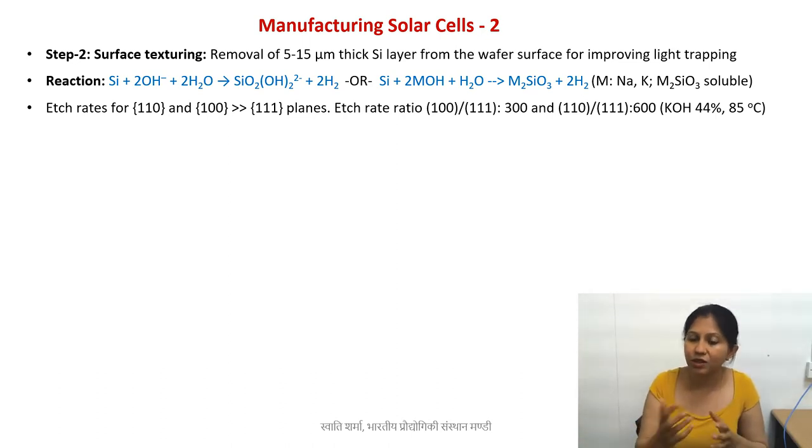Silicon has 110 planes, 100 planes, and 111 diagonal planes. The etch rates for 110 and 100 planes are much higher compared to the 111 planes. The etch ratios can be controlled by temperature and concentration.